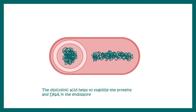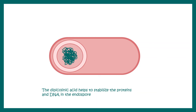Dipicolinic acid helps to stabilize proteins and DNA inside the endospore. Dipicolinic acid gets deposited onto the spore at this point. Eventually the mother cell DNA is degraded and eliminated. Now the spore has its own DNA and a thick coat — the thick coat is actually formed of peptidoglycan, and this is known as the cortex.